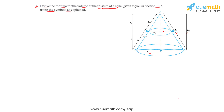We have taken the slant height of the frustum part to be L and its height to be H. The slant height of the smaller cone formed above can be taken as L2 and its height as H2. So L2 can also be written as L1 minus L, and H2 can also be written as H1 minus H.